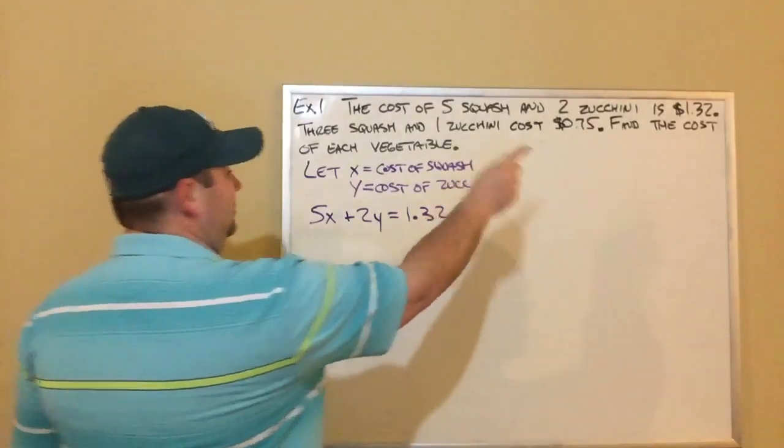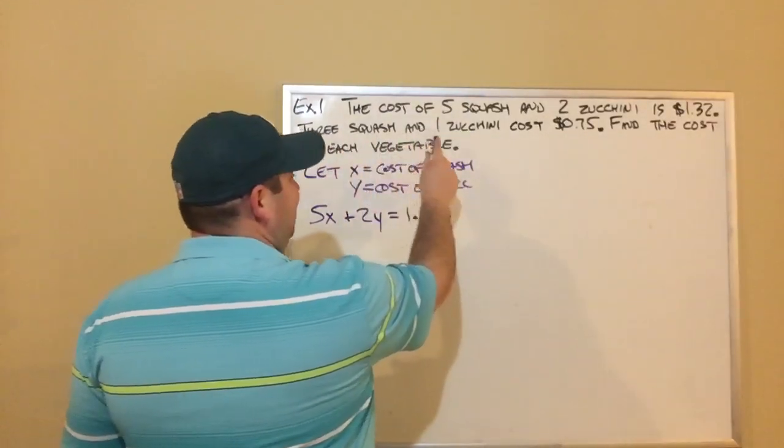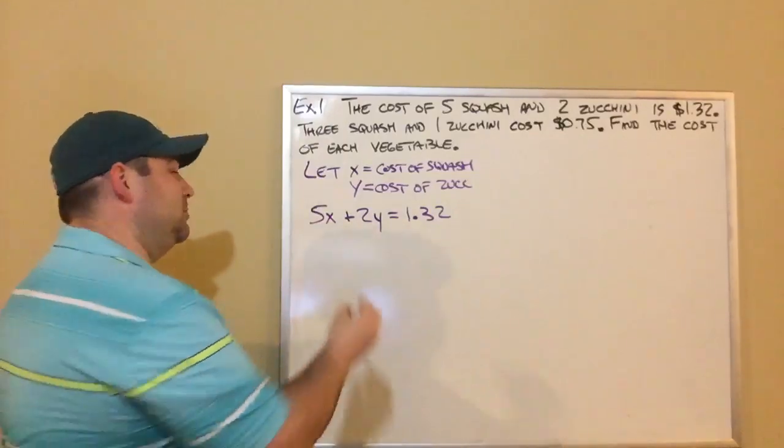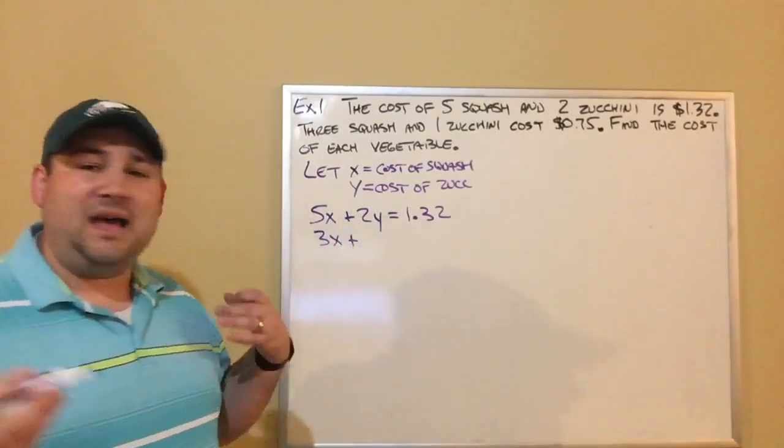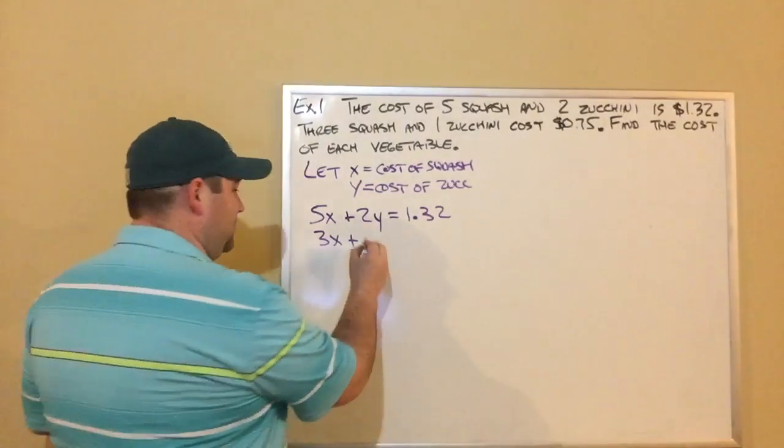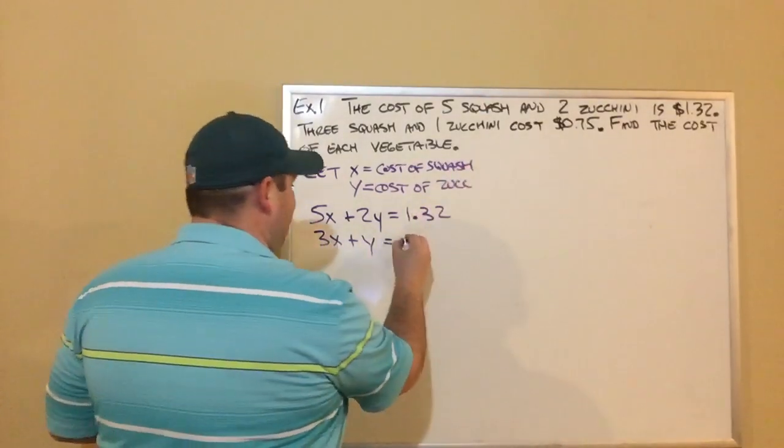So my second equation, I'm going to look at the second sentence, three squash and one zucchini costs $0.75. So I'm going to do the same thing here. 3X plus Y equals $0.75.